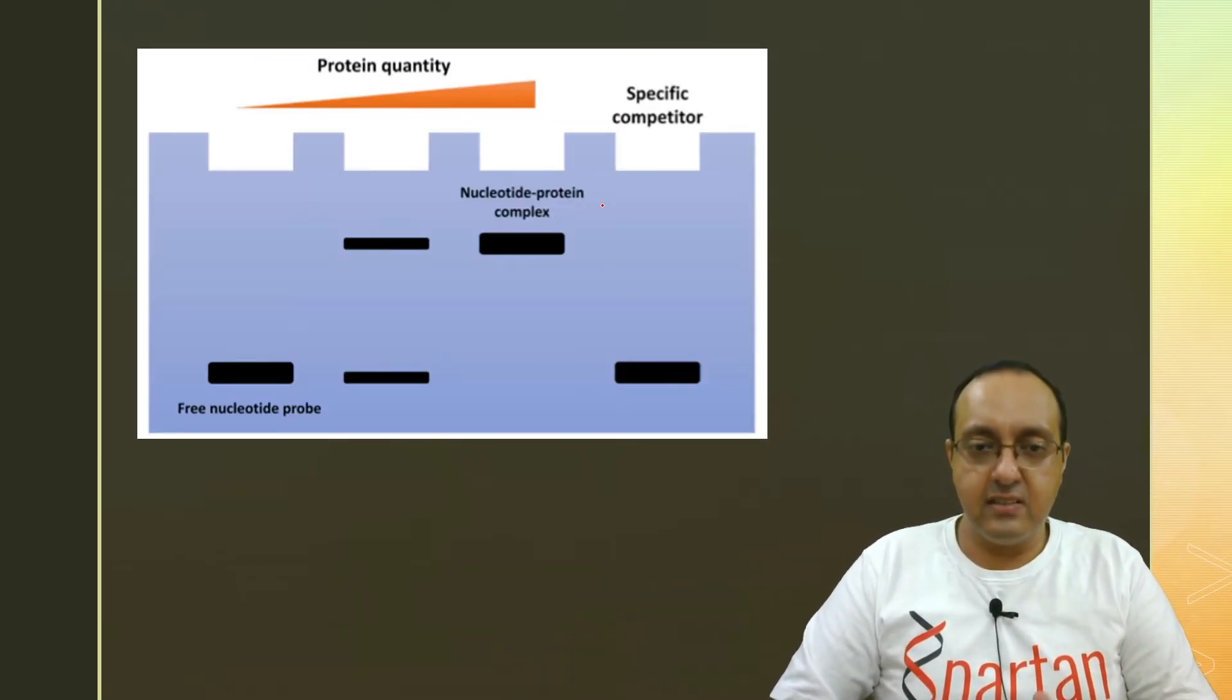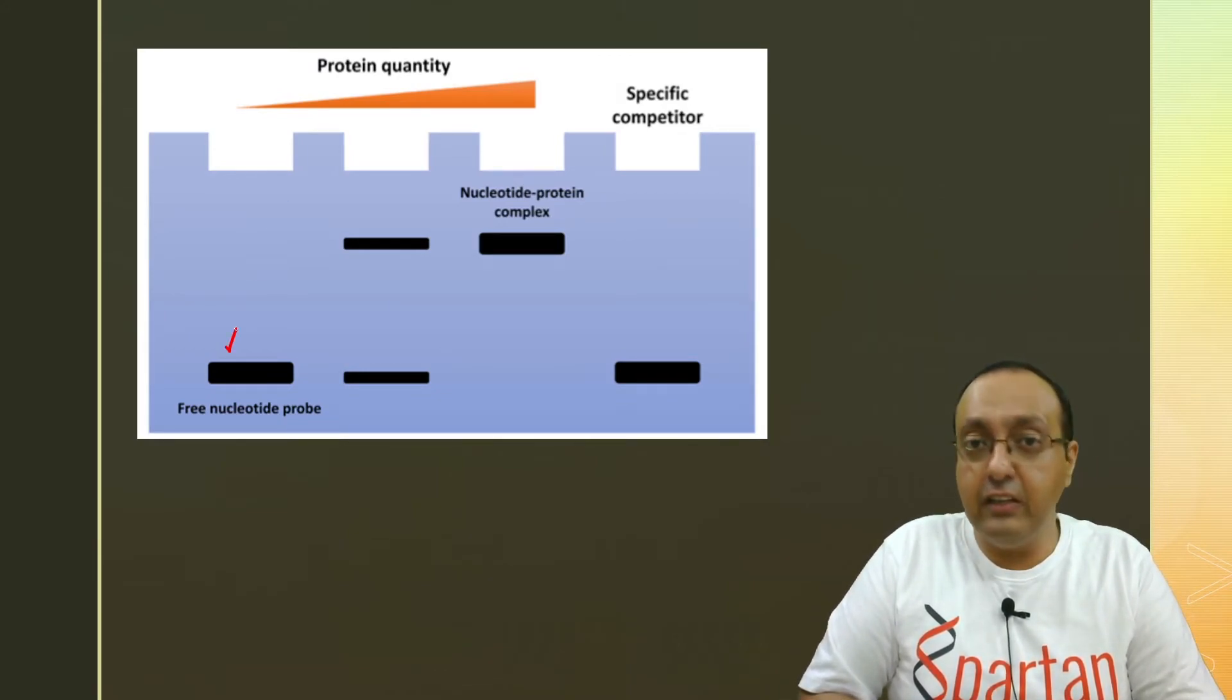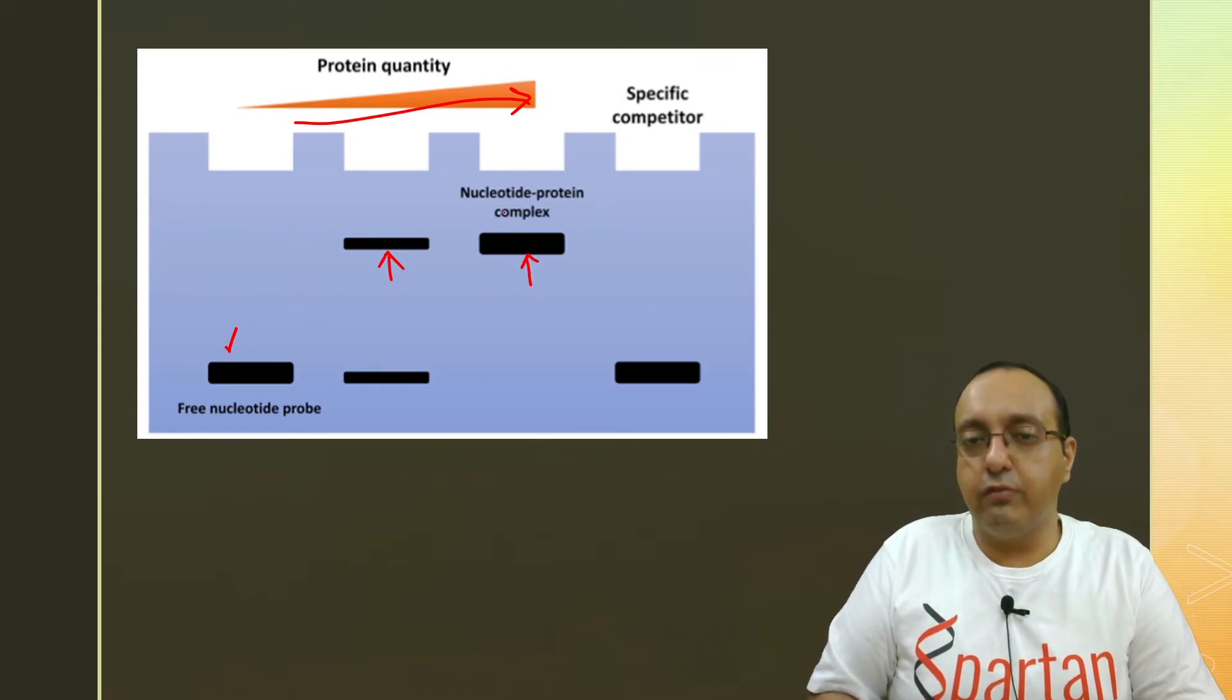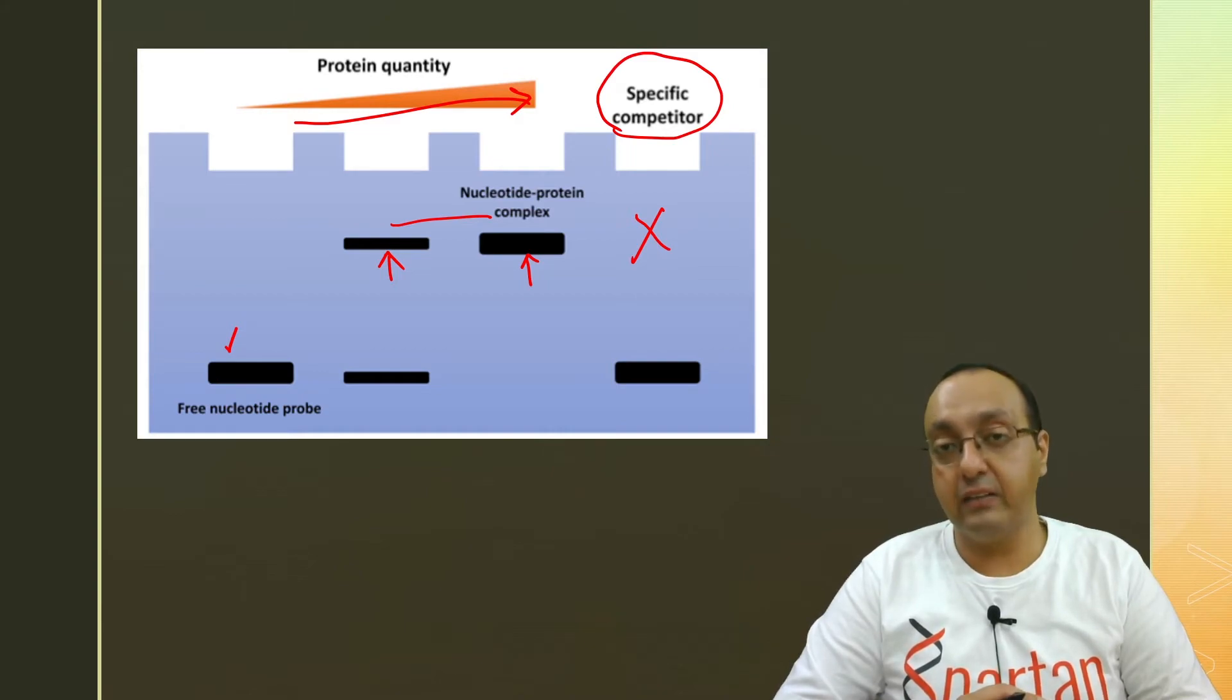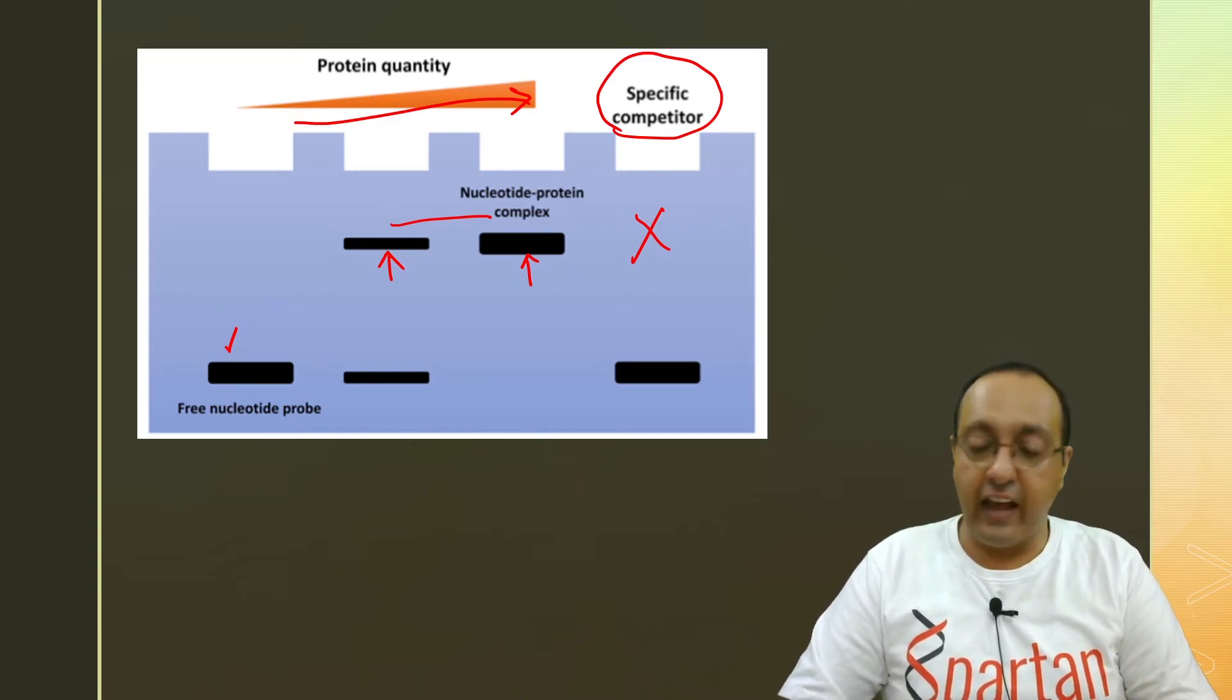So here is the setup again, just to reiterate my point where we have free nucleotide probe increasing protein quantity. It leads to the shift here and leads to formation of nucleotide protein complex as you increase the amount of protein. If you use a specific competitor, it leads to abolition of this band. So pretty much this is the overall setup for gel shift assay.